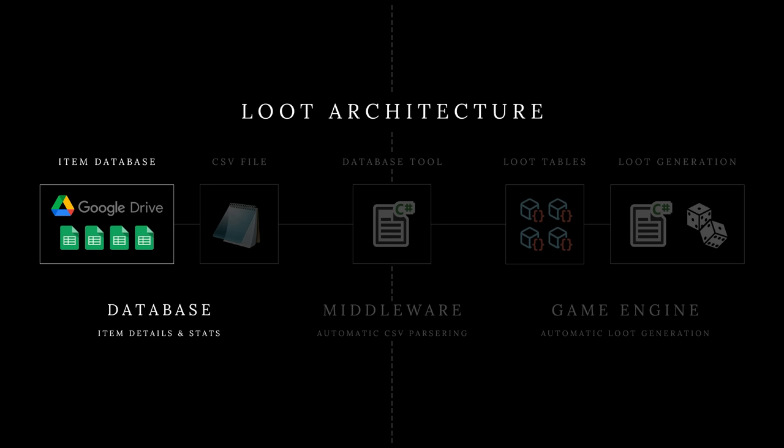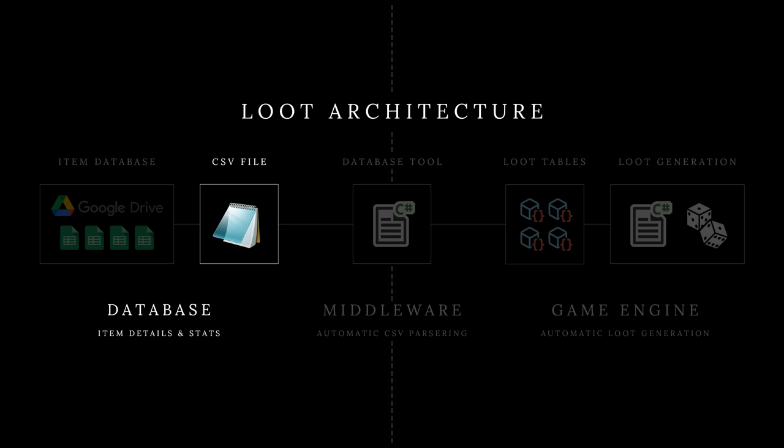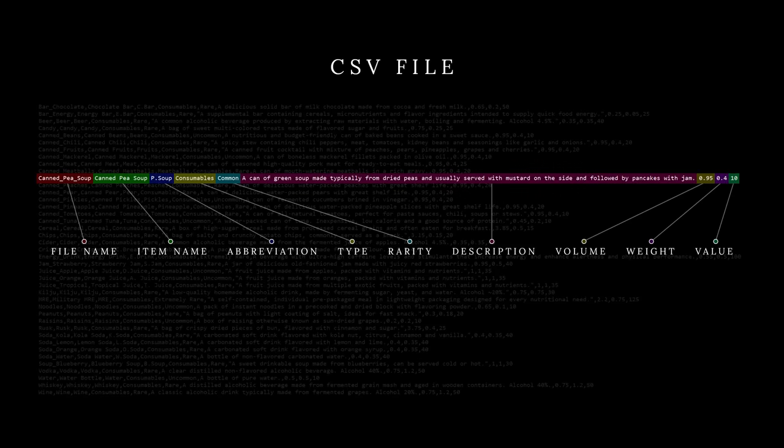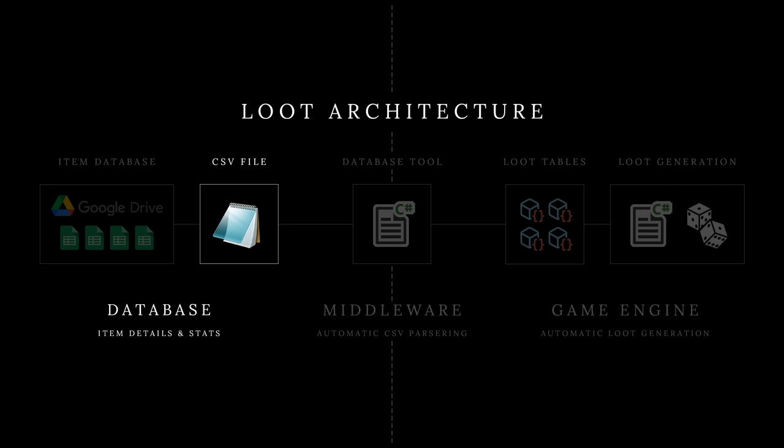Once the item data is stored in the cloud, the next step is to convert the data to a format readable in the game engine. The data format I use is called CSV, which stands for comma-separated values. If we look at this data format, it's basically just comma-separated text elements that can be read line by line. And here's our target item and its data.